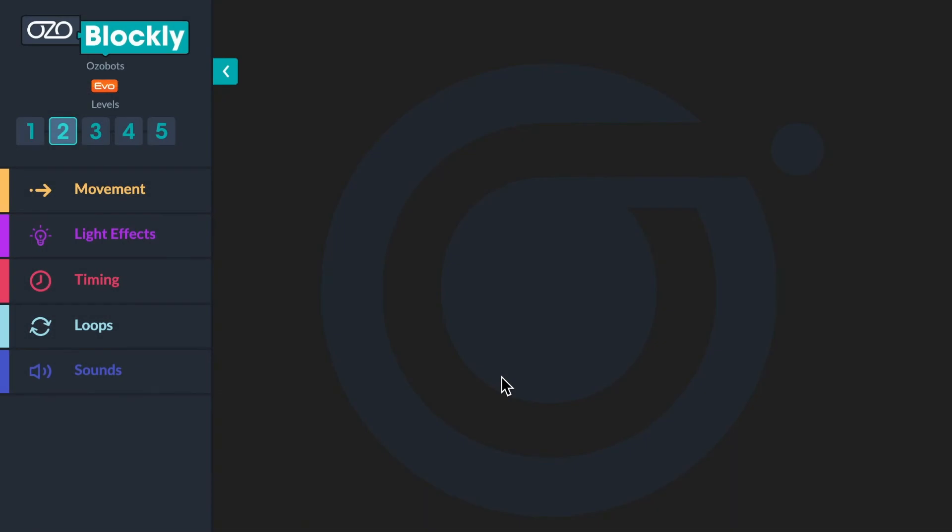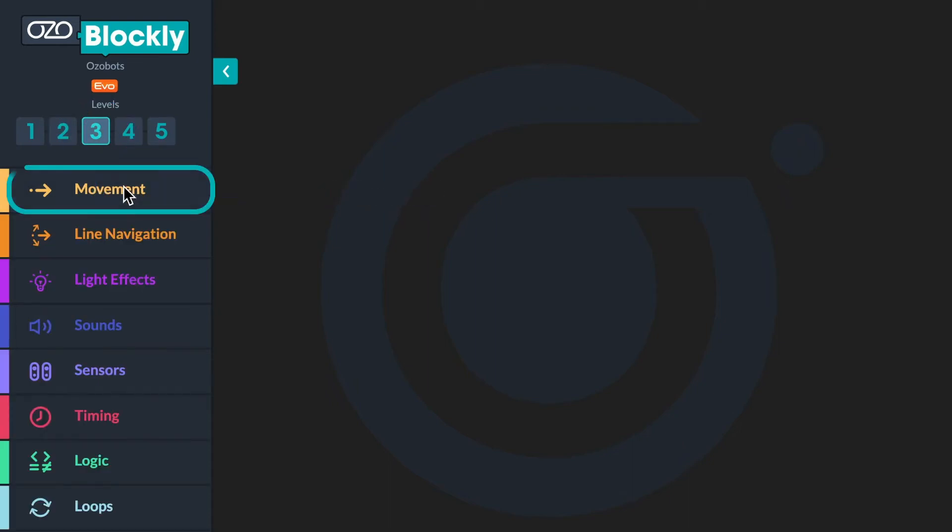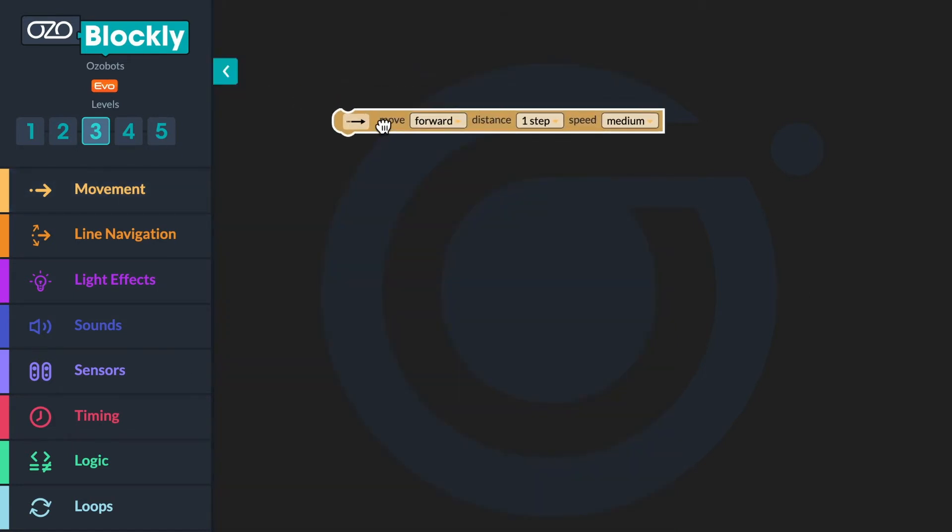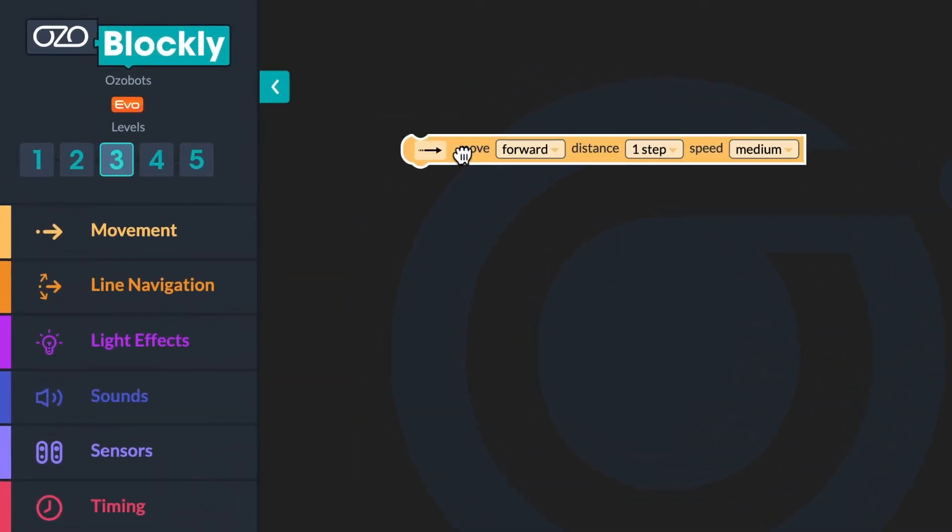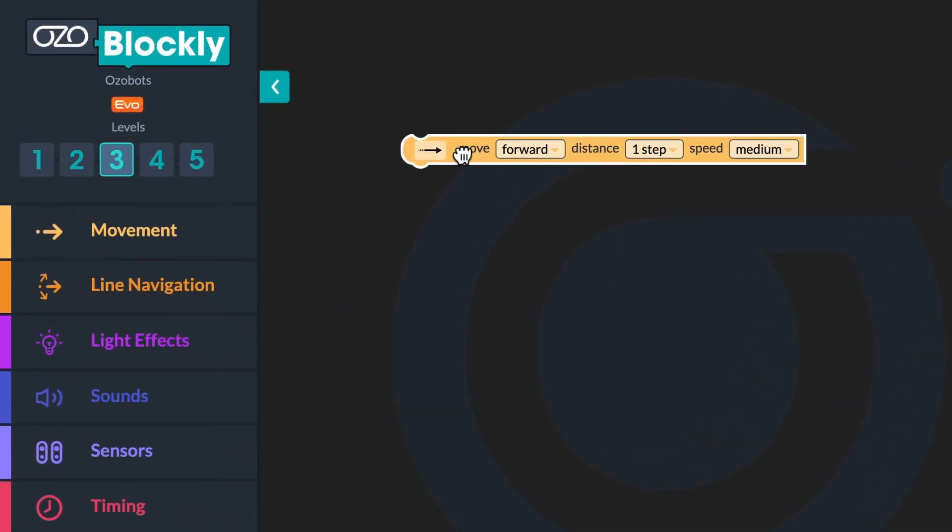Time to start coding. You will tell your bot to move forward continuously over and over again whenever the program is running. Open Ozoblockly and select Level 3. To begin, go to Movement in the Block panel. Click and drag a Move Forward Distance 1 Step Medium block into your workspace. Then use the drop-down menu to change the number of steps from 1 to 2. This will tell your bot to move a greater distance at one time.